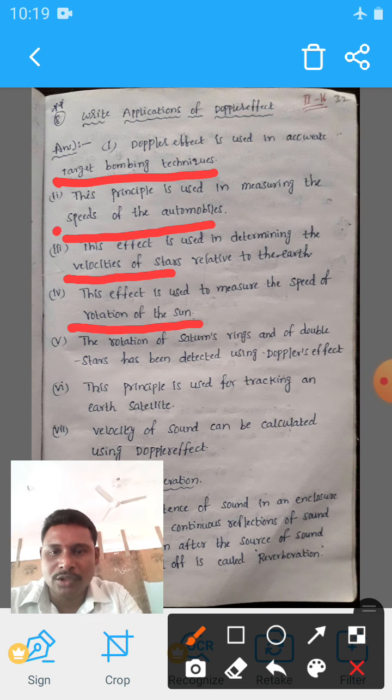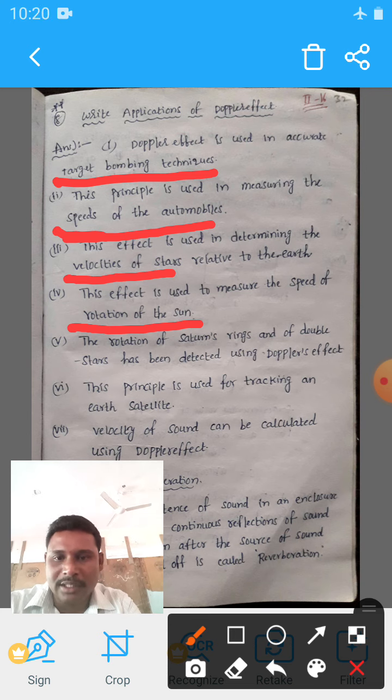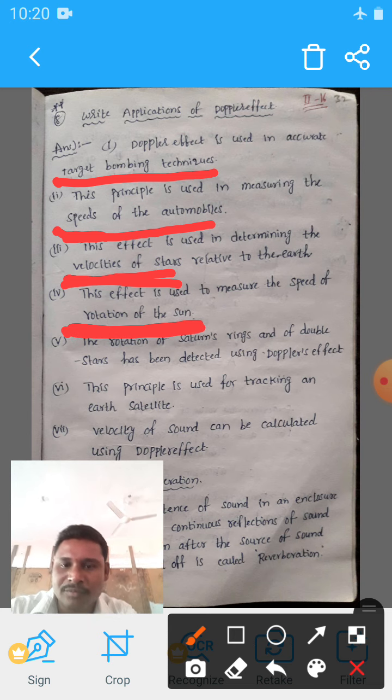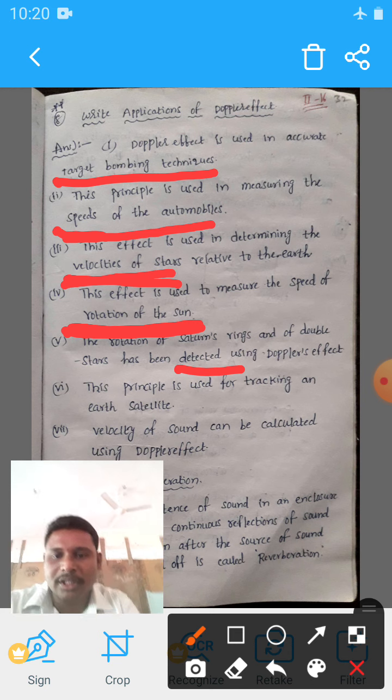The speeds of the automobiles, the velocity of the stars, the rotation of the sun, Saturn rings, and double stars' rotation can be detected using Doppler effect.